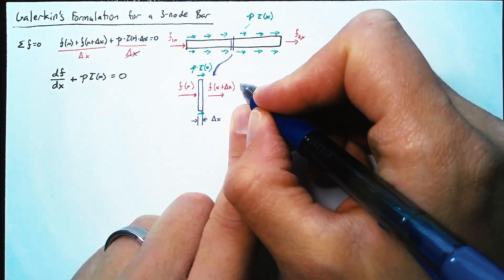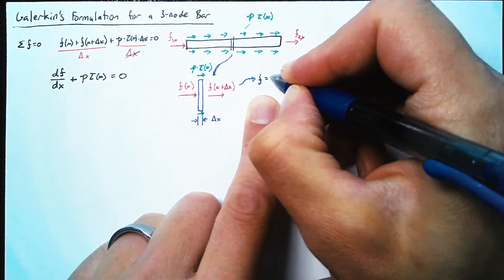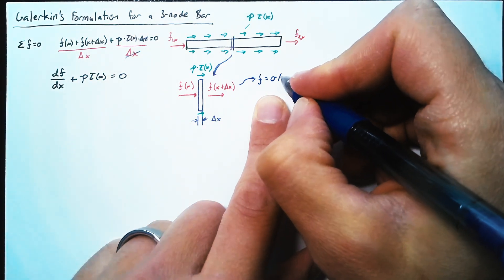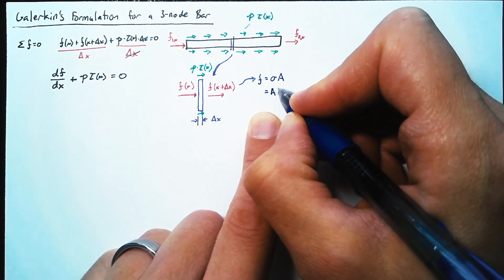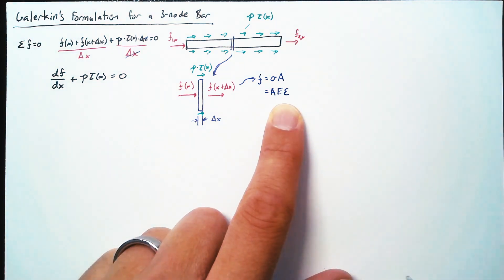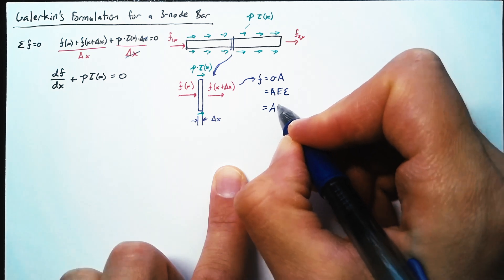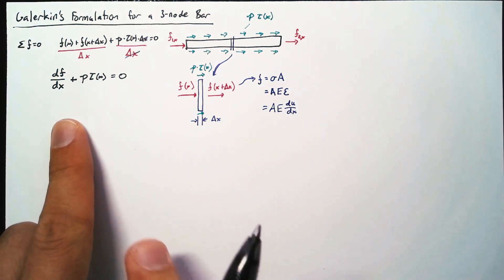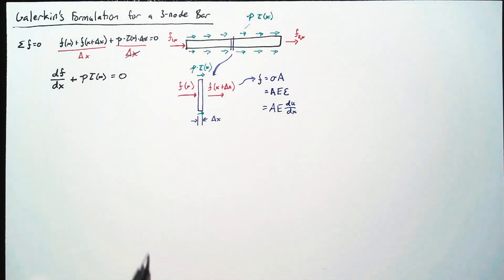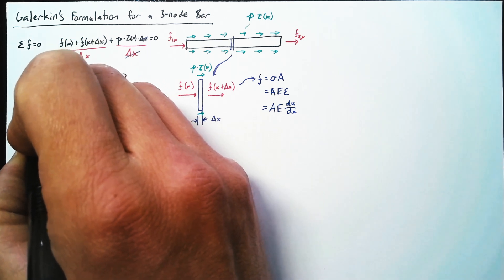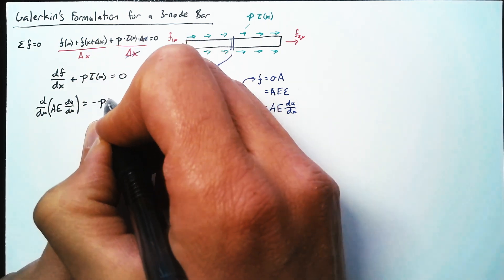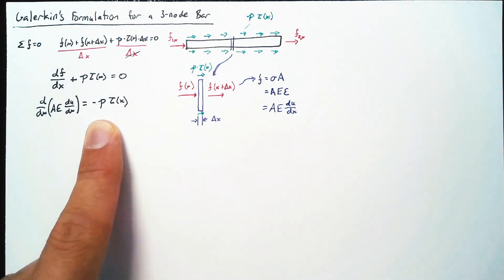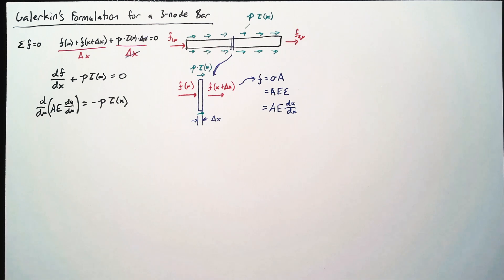Diving into what this force actually means: our force here is the compressive or tensile stress multiplied by the cross-sectional area. So we can rewrite this as A times E, the Young's modulus, multiplied by the strain epsilon, or AE times du/dx. Plugging this in, we get the final form of our equation: A · d/dx(AE · du/dx) equals negative perimeter multiplied by the shear stress at point x. So far we've just derived the differential equation for a bar.